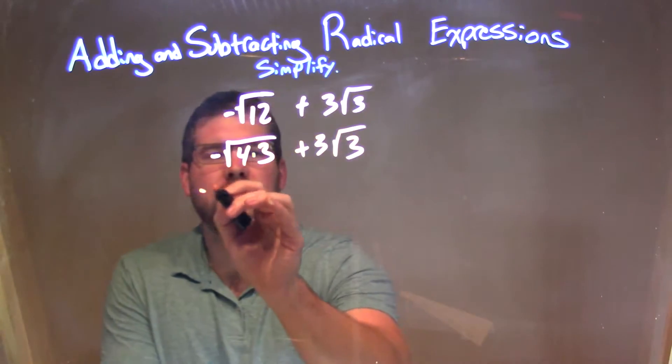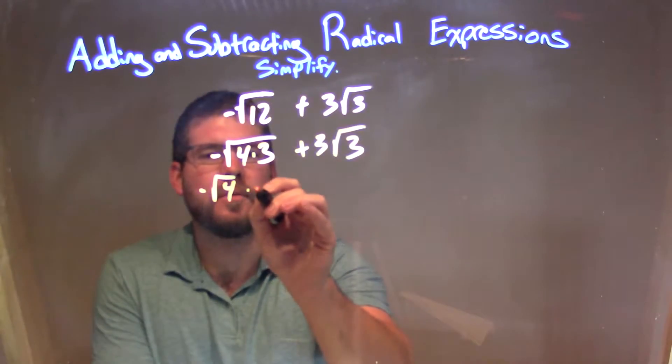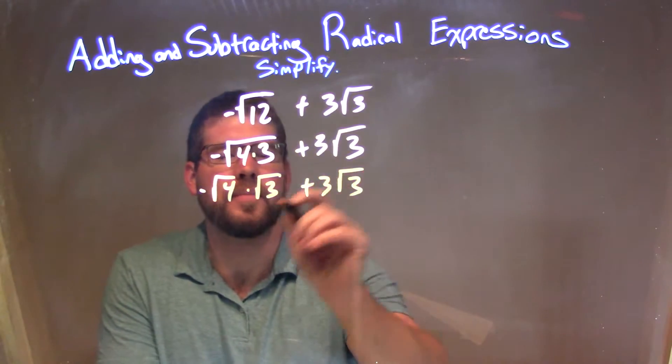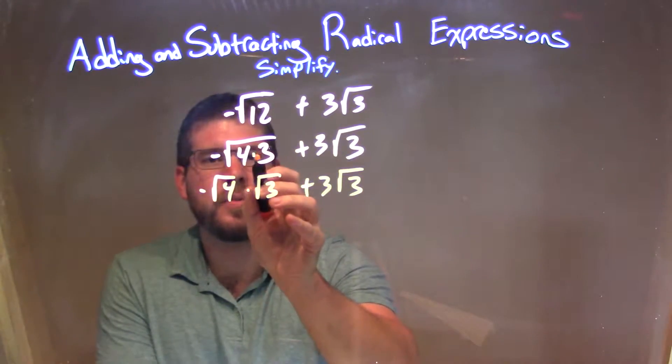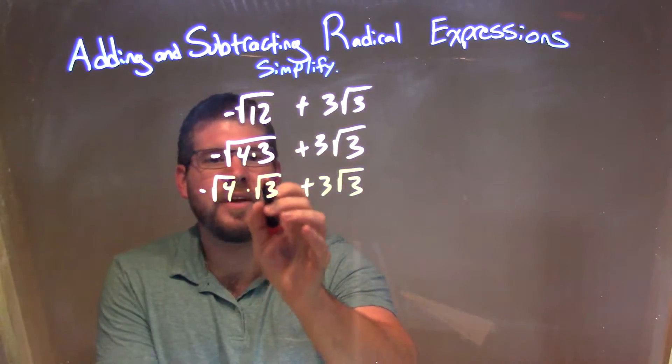So now I'm going to separate this. Negative square root of 4 times the square root of 3 plus 3 times the square root of 3. We're allowed to separate here. This multiplication inside, we're going to separate into the square root of each part individually.